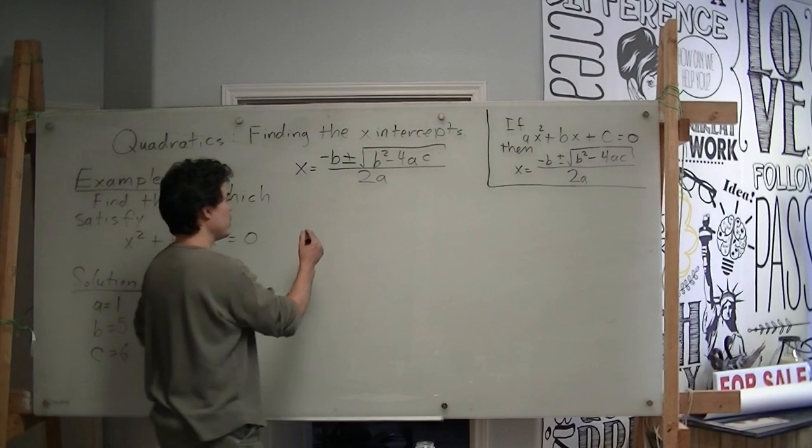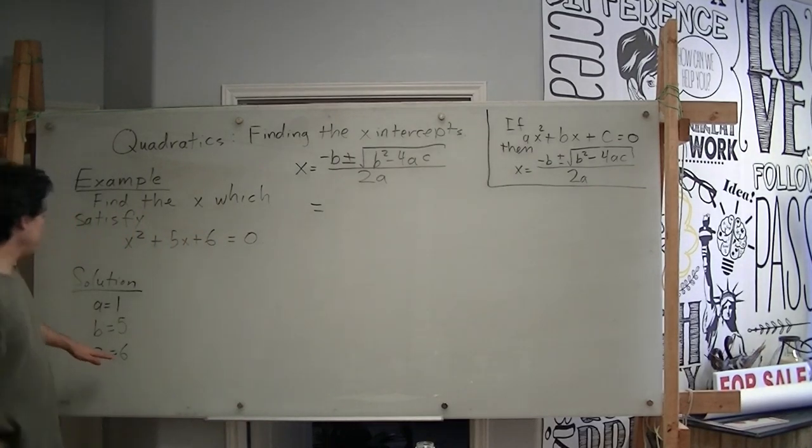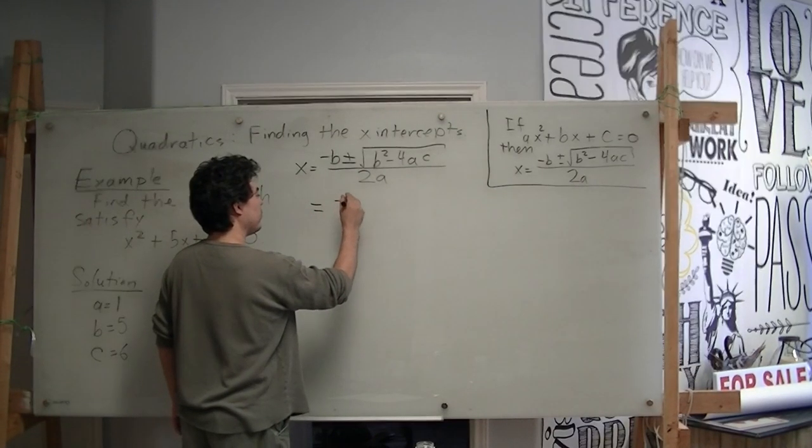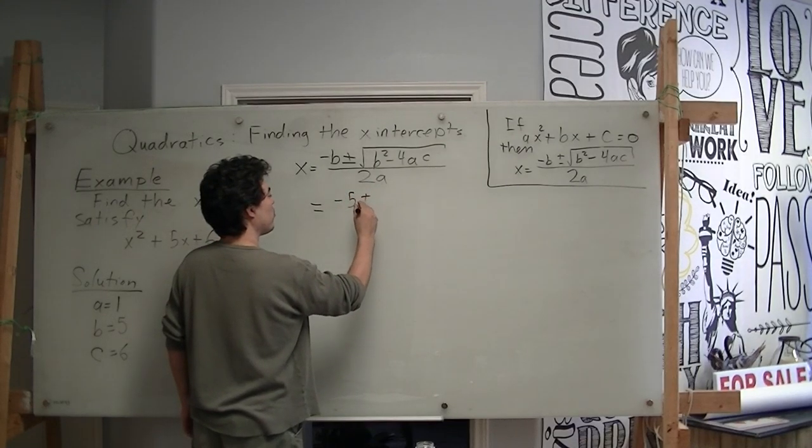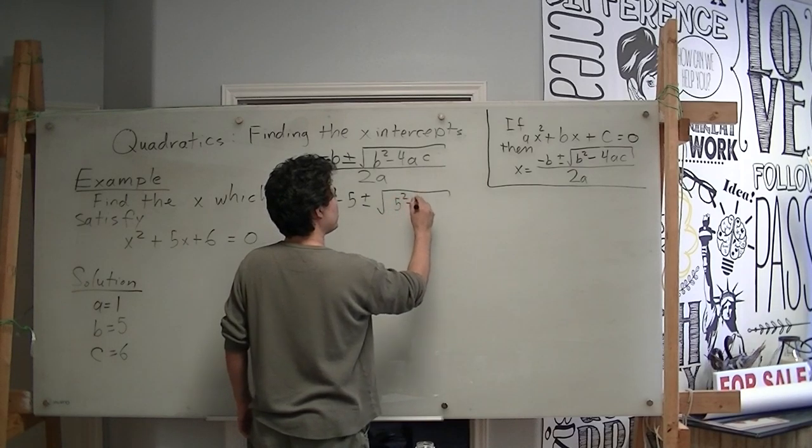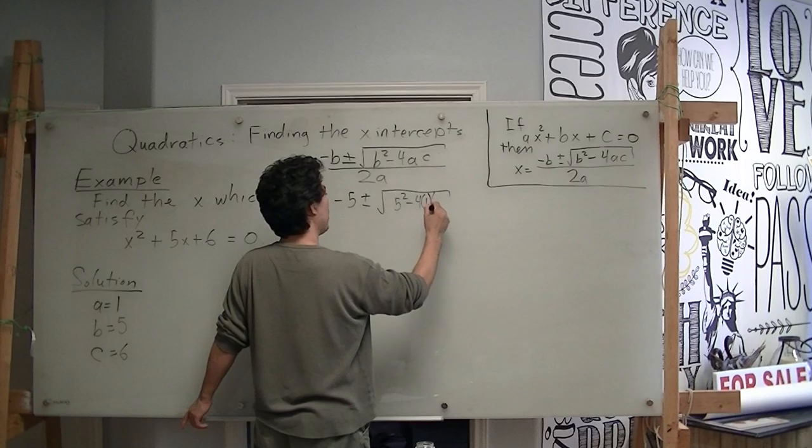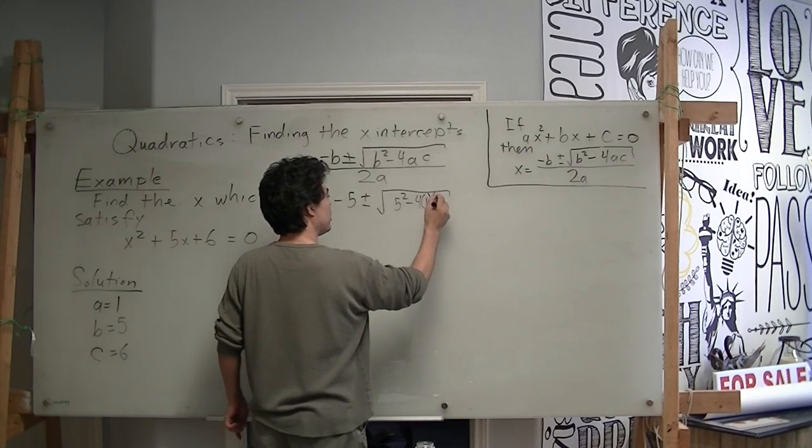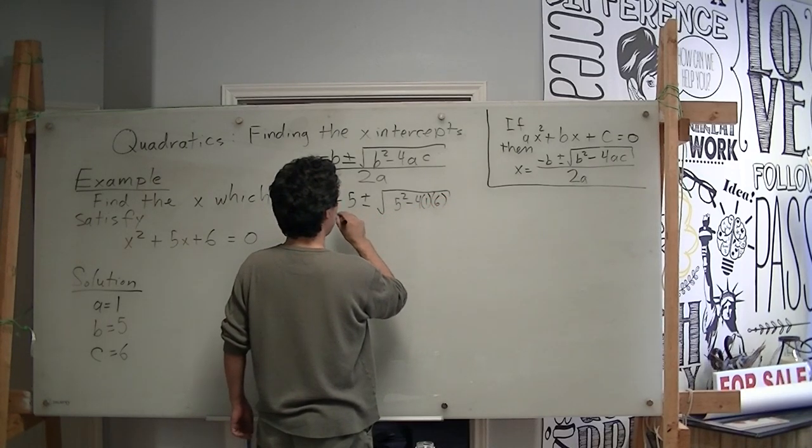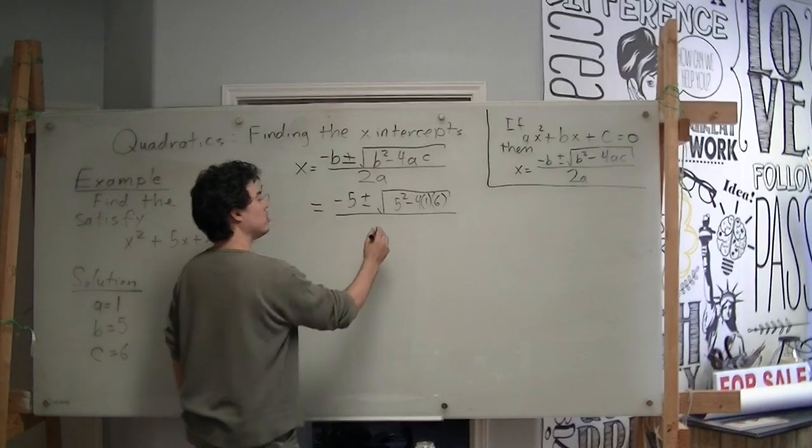So I'm going to start plugging in. My b is 5, so it's going to be negative 5 plus or minus the square root of 5 squared minus 4. Our a is 1 times 1. Our c is 6 times 6. All divided by, our a is 1, so 2 times 1 is 2.